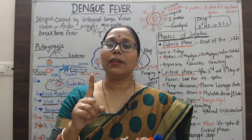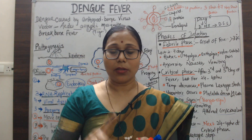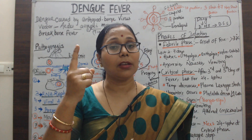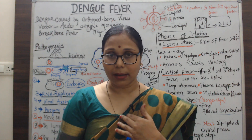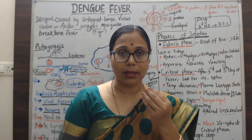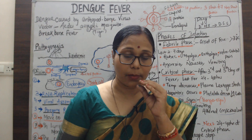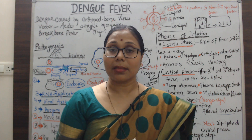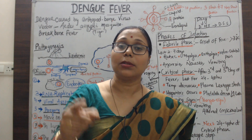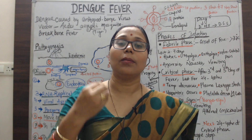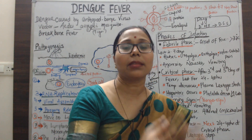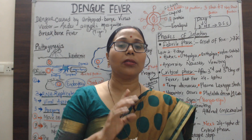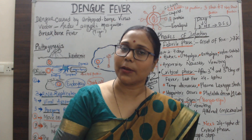The female Aedes aegypti mosquito bites us. When an infected female Aedes aegypti mosquito bites us, it sucks our blood through its proboscis. It takes our blood as a meal, and the dengue virus it carries enters into our skin through this proboscis.